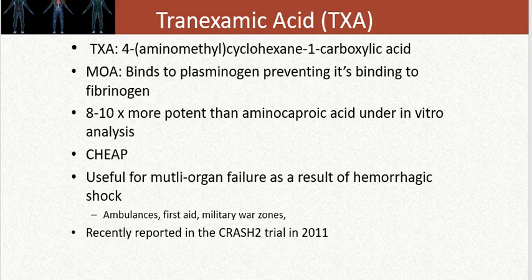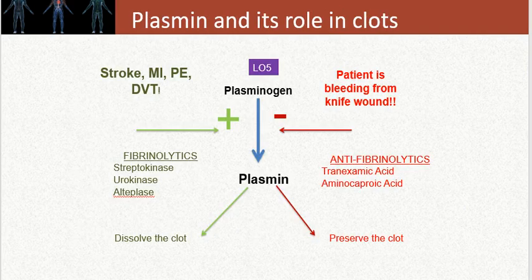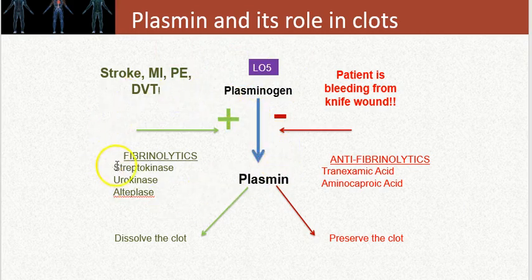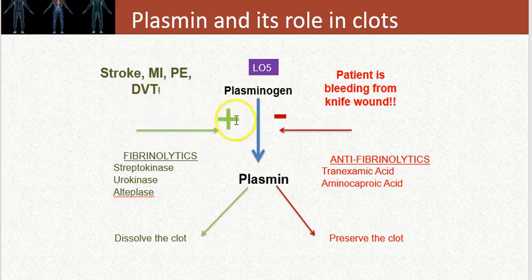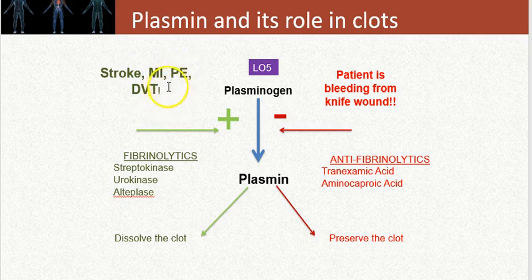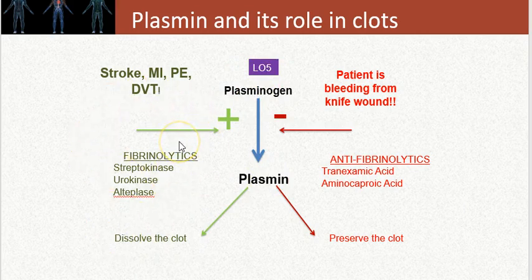Plasmin plays a central role in clots. Looking at this diagram, the left side in green covers specific diseases where we want to positively affect the plasminogen-to-plasmin cascade. In the context of stroke, myocardial infarct, pulmonary embolism, and deep vein thrombosis, we want to activate or stimulate the conversion of plasminogen to plasmin to assist in dissolving the clot.